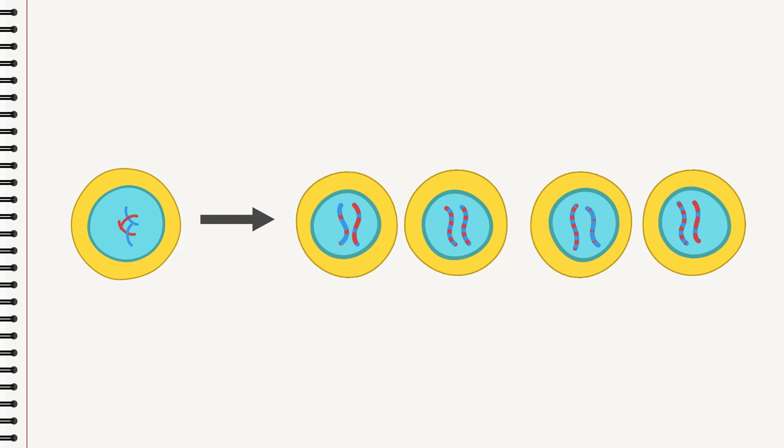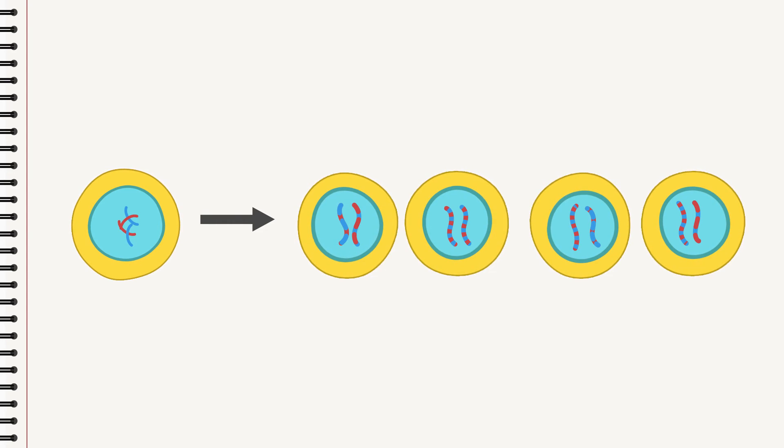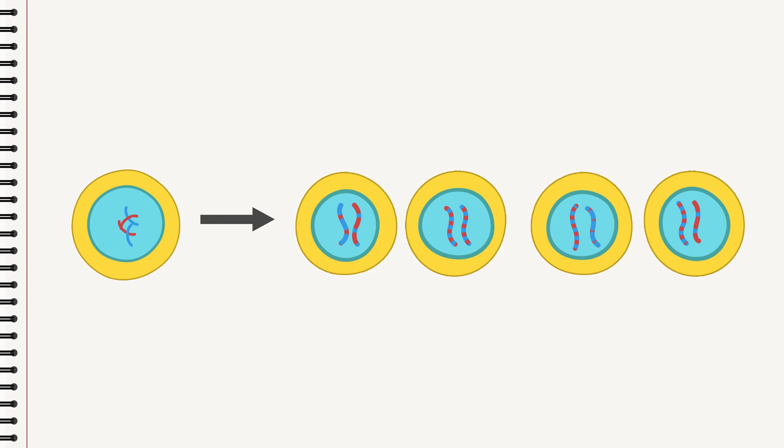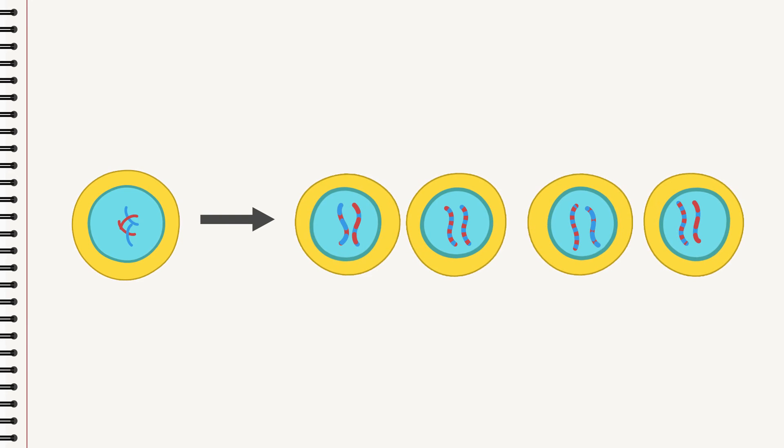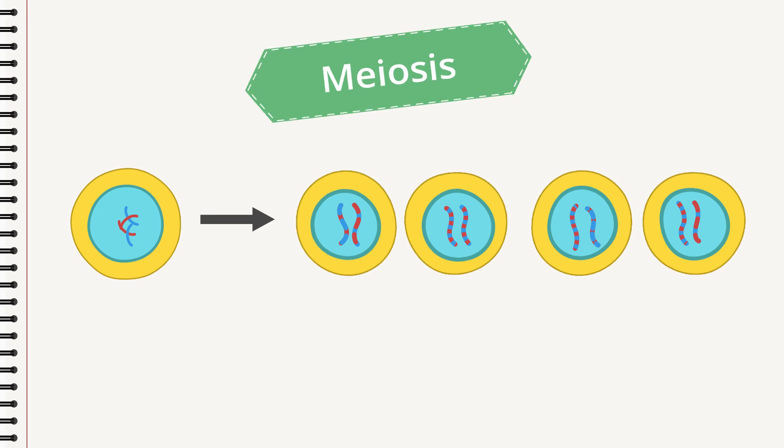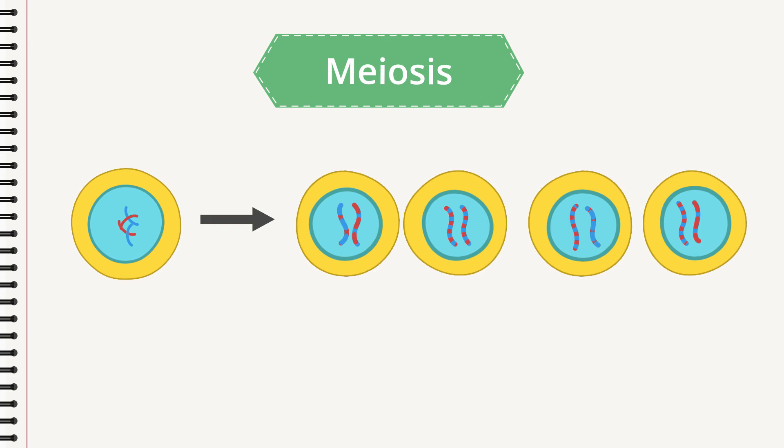Four cells with half the number of chromosomes, and every set of chromosomes is totally unique. This kind of cell division, from one cell to two to four cells with unique genes, is called meiosis.